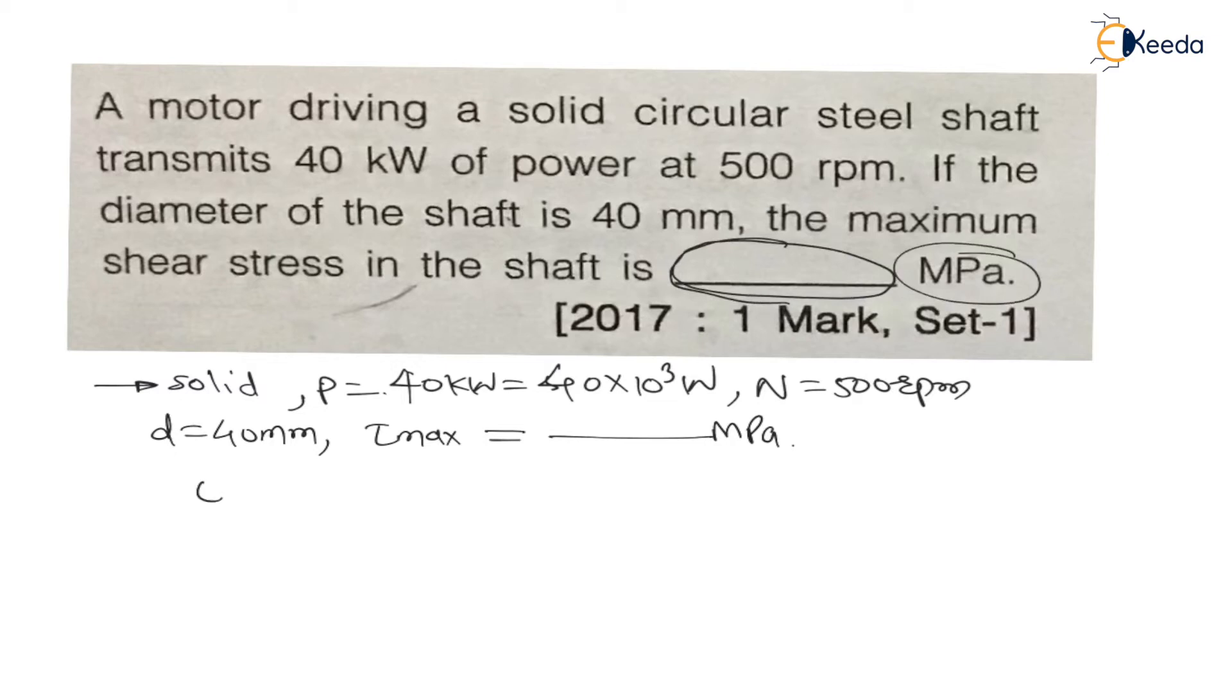Now for solid circular shaft, maximum shear stress is 16T upon πd³. This expression we have already derived. From this equation only torque is unknown, diameter is known. First of all we have to find torque.